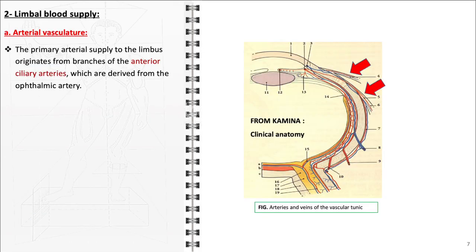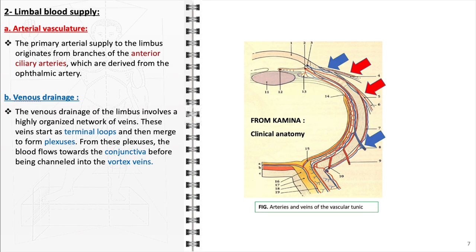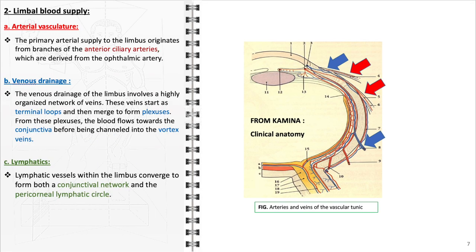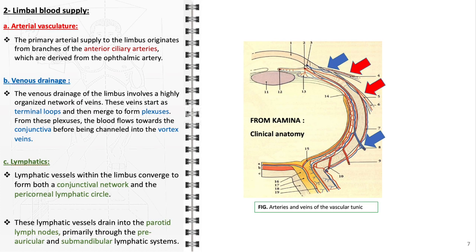The blood supply of the corneal limbus is integral to its function. The corneal limbus receives its primary arterial blood supply from the anterior ciliary arteries, which branch out from the ophthalmic artery. The venous drainage system at the limbus consists of an organized network of veins that begin as small loops at the limbus and gradually merge into larger plexuses. The blood from these plexuses is then directed towards the conjunctival veins and eventually into the vortex veins. The limbus also has a network of lymphatic vessels that join to form the conjunctival and pericorneal lymphatic circles, draining into the regional lymph nodes, including the preauricular and submandibular lymph nodes.